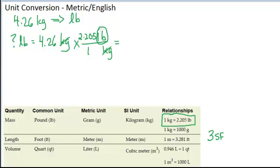Careful about this being my unit. I'll punch in 4.26 times 2.205. I can hit divided by 1 if I want to but I don't have to. And then my calculator will display the answer. I'll see 9.3933. That is the answer before we round it.